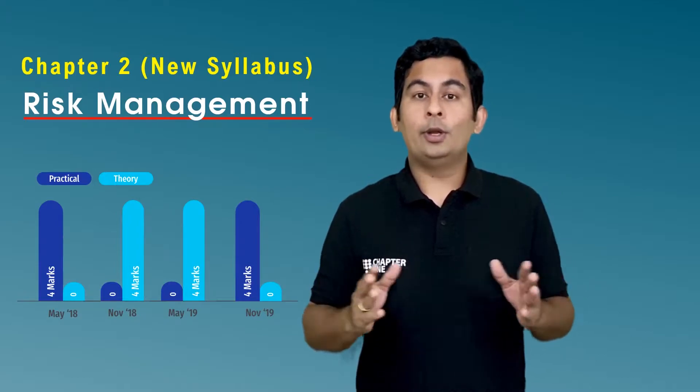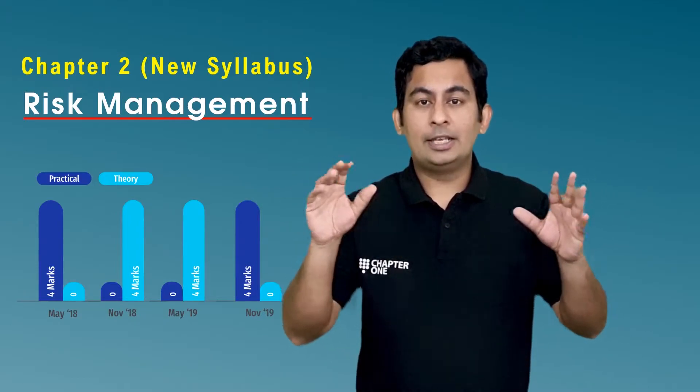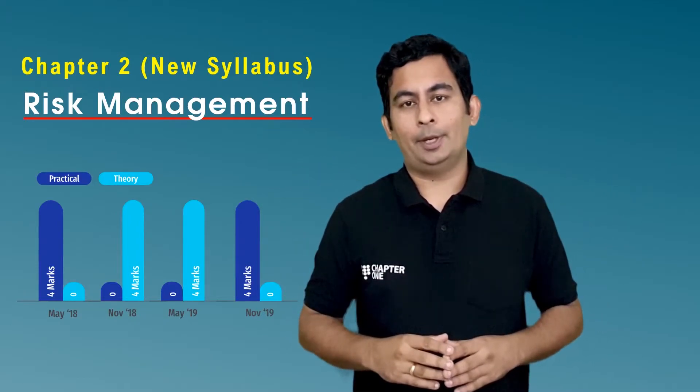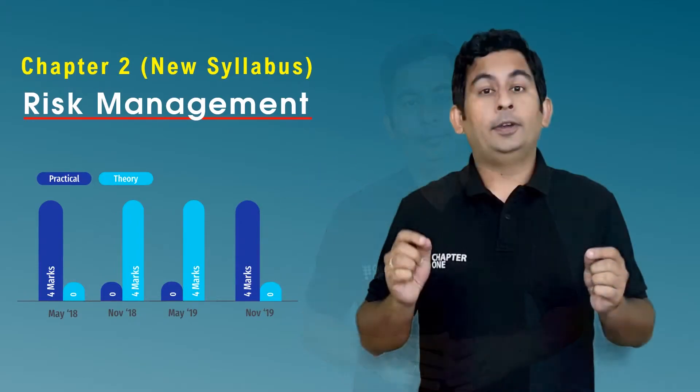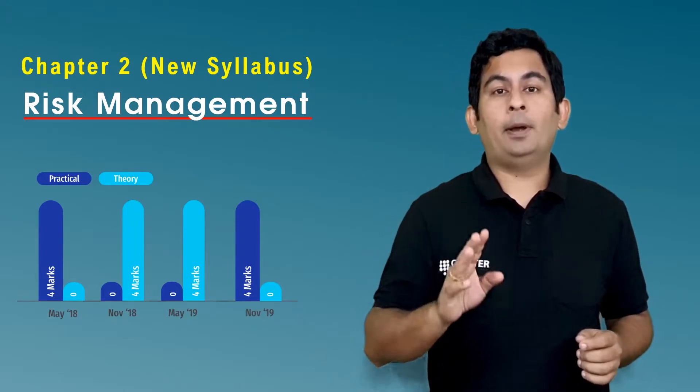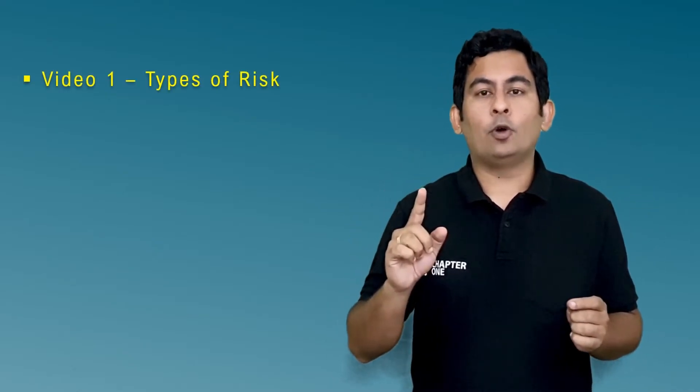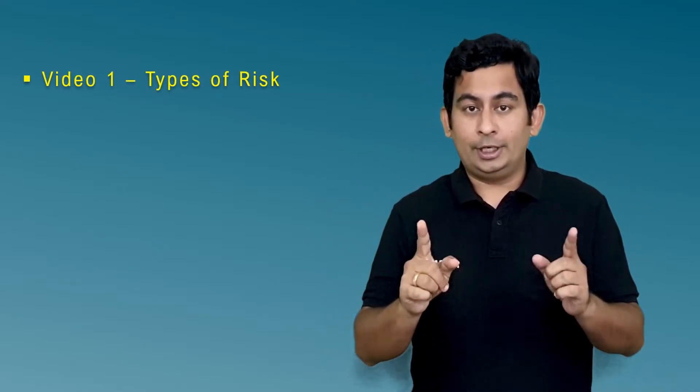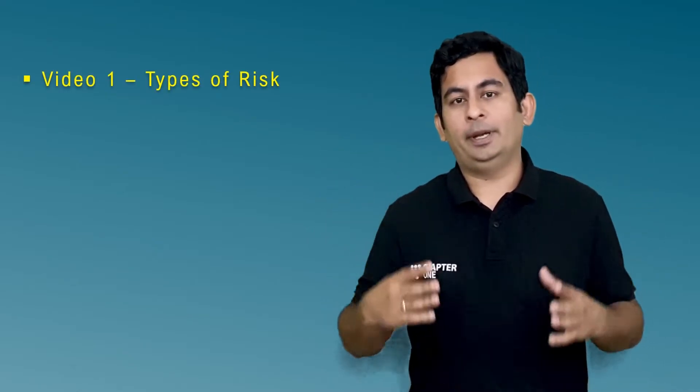So now let's take a look at the bird's eye view of the chapter. We have broken down this chapter into three parts to make your learning process simple, quick and effective. In the first video, you will be learning what is risk and what are the different types of risk, with special focus on financial risk, which is our core competence.